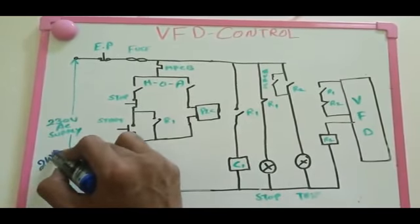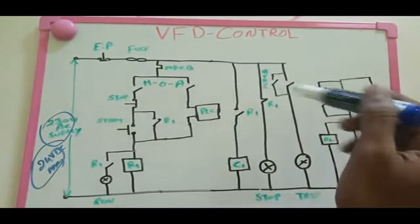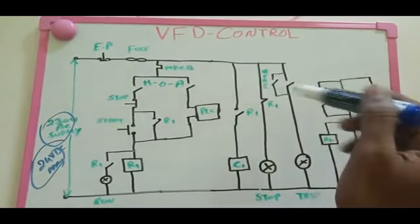Here I show the emergency push button - this is for emergency purposes. You can push this and the whole system is going to shut down. That's why we are providing the emergency push button here. And this one is the control fuse - for the whole system we need to provide some protection, so that's why we need to give the control fuse.